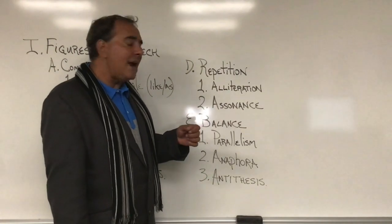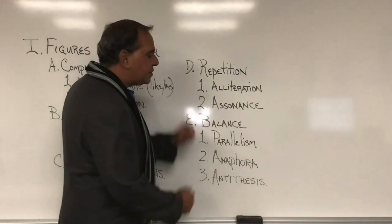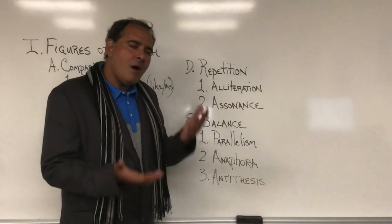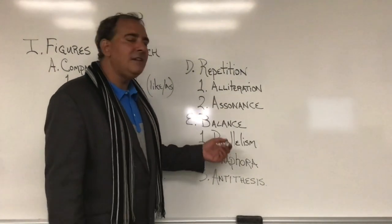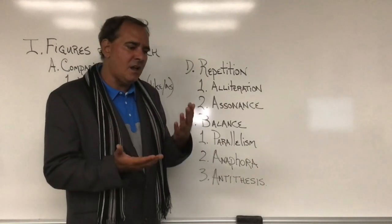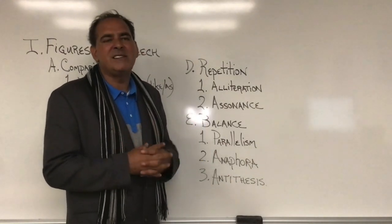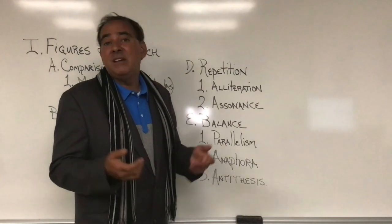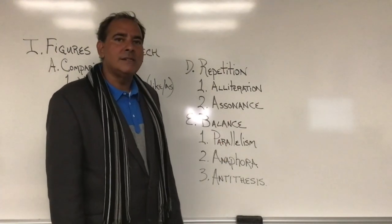Finally, I'd like to talk about some figures of speech that deal with issues of balance, because we always want to balance our points out pretty well. Parallelism is kind of the catch-all — we're going to see balanced clauses, balanced words, balanced phrases. So like the saying 'easy come, easy go' would be an example of what we call parallelism.